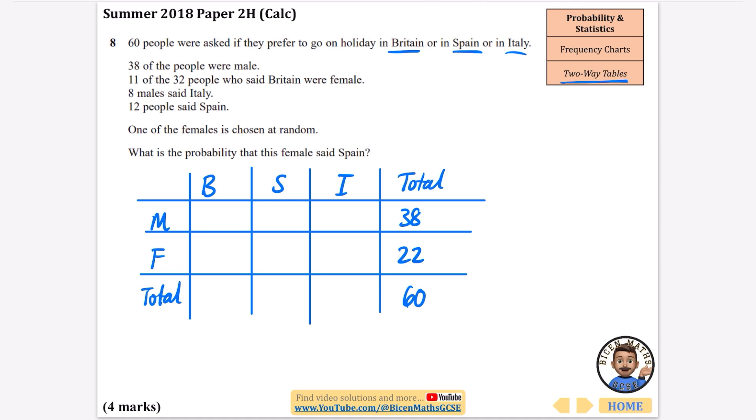11 of the 32 people who said Britain were female, so 11 of the 32 people were female, and 32 take away 11 is 21, so I can now fill in that part.